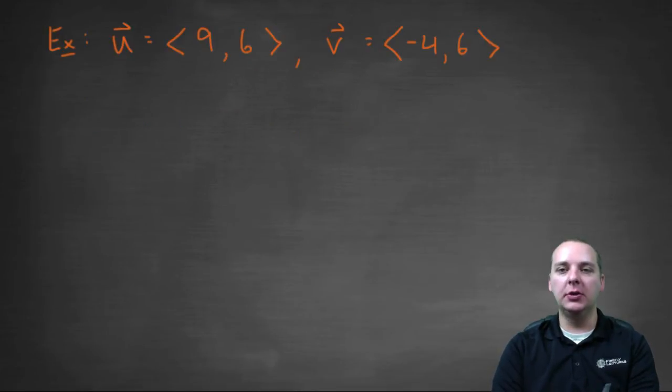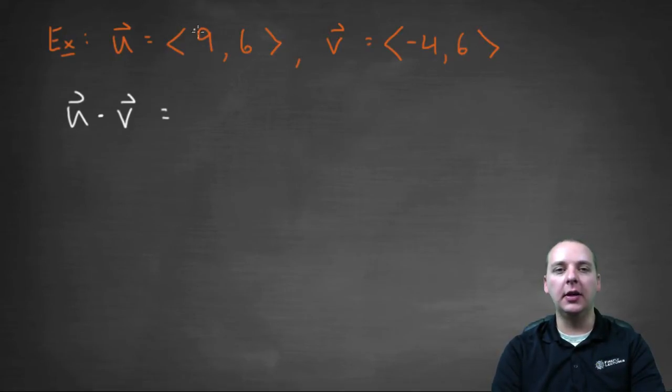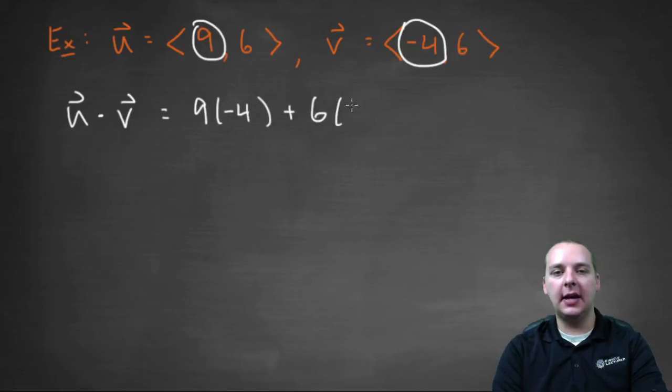Let me do a quick example for you, just to show you how a dot product actually plays out. So here I've defined vector u as nine comma six, and vector v as negative four comma six. So if you want their dot product, u dot v. For this one, notice I was not given the angle between them. So I'm going to use the first definition, since they just told me vector u and told me vector v. I'm going to take nine times negative four, I'll write this out for your notes, nine times negative four, plus six times six.